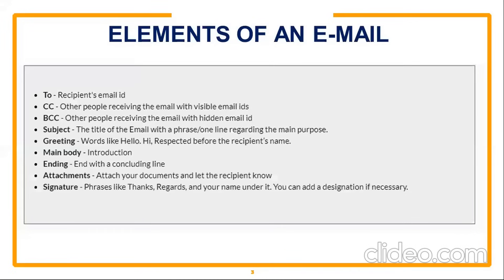Let's know about the important elements of an email — the components of an email. The email consists of: number one, the To address, that means the recipient's email ID — whom we are writing, the person's email ID we need to type. Then we have two important terminology which are optional: CC and BCC.